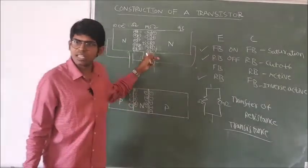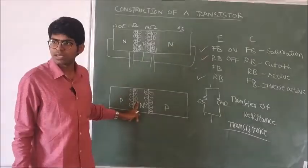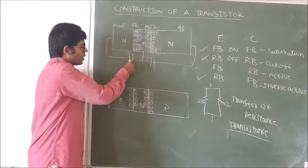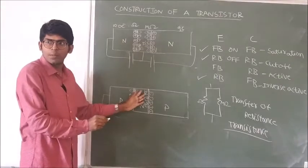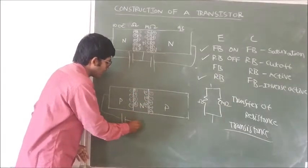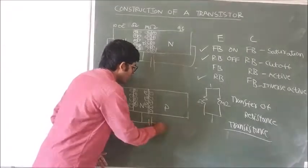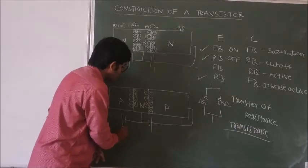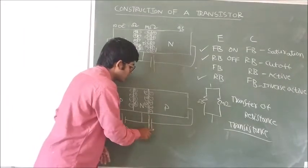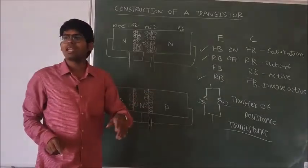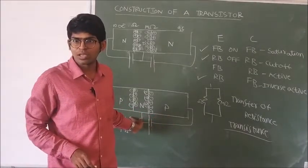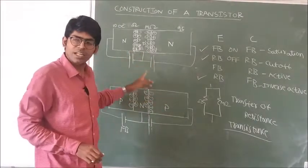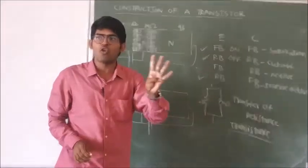Here we have an NPN transistor and a PNP transistor. Whatever has been discussed for the NPN transistor is equally applicable to the PNP transistor. For a PNP transistor, forward bias means the positive terminal of the battery is connected to P and the negative terminal is connected to N. To operate in the active region, the emitter junction must be forward biased and the collector junction must be reverse biased — then the PNP transistor acts like an amplifier in the active region. Both PNP and NPN transistors can be biased in four possible ways.